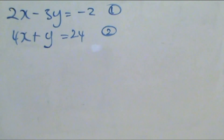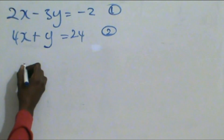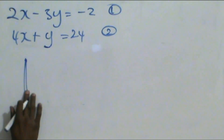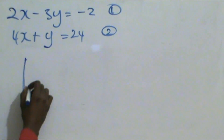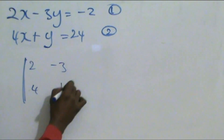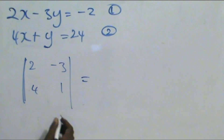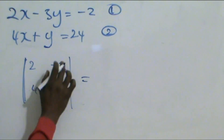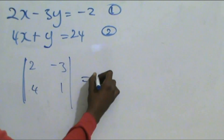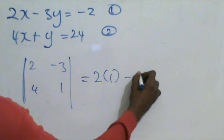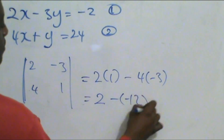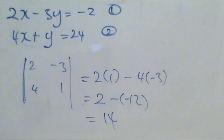The first thing to do is find the determinant of the matrix. The determinant of [2, minus 3; 4, 1] is AD minus BC: 2 times 1 minus 4 times minus 3, which gives us 2 minus minus 12, which equals 14. So the determinant is 14.